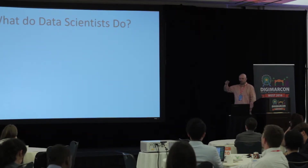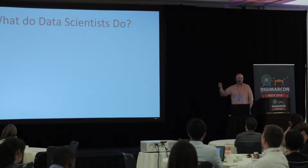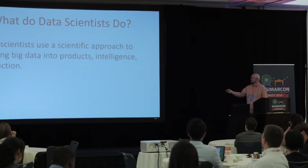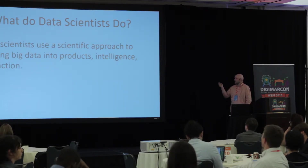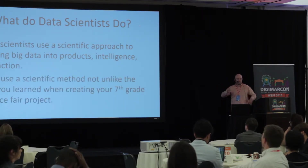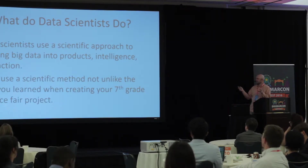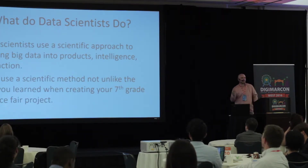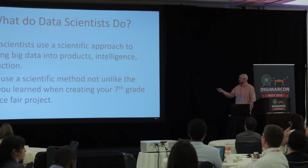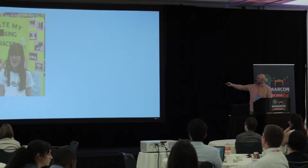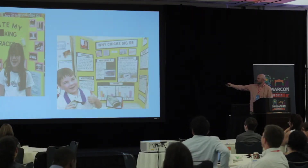Now what do data scientists actually do? What makes somebody a data scientist? They use a scientific approach to refine big data into products, intelligence, and action. Most people remember the scientific method from their seventh grade science fair project, and this is not unlike that. It's a scientific approach and methodology similar to the one you all learned when you did your seventh grade science fair project.